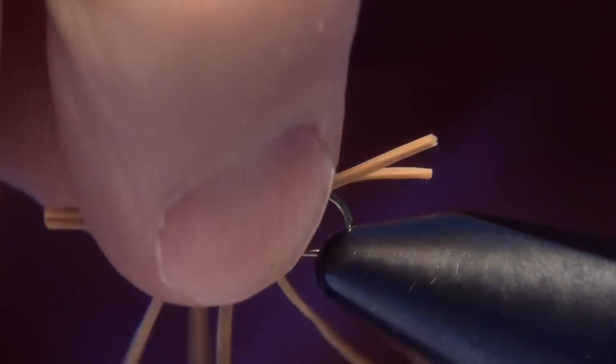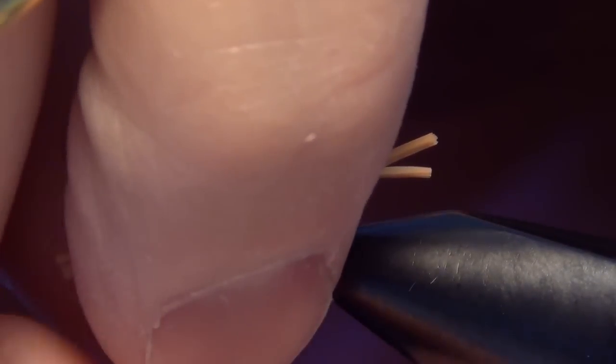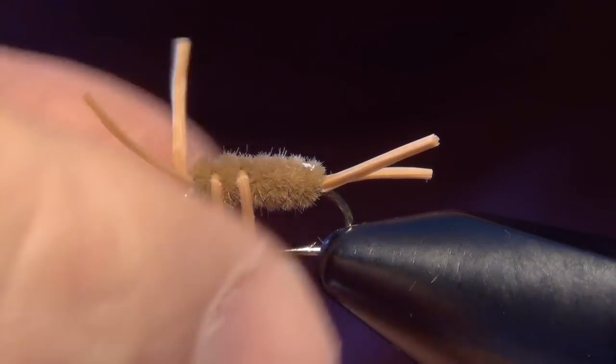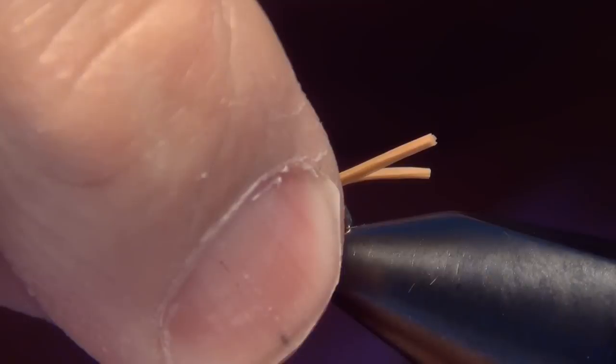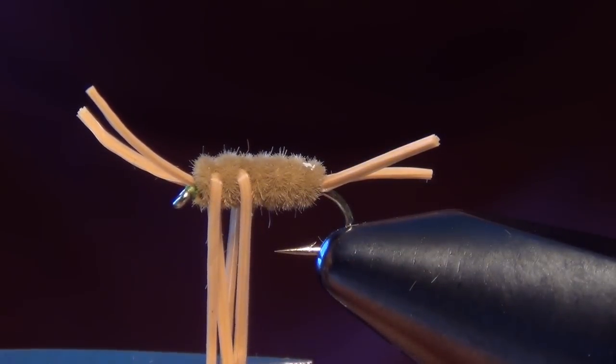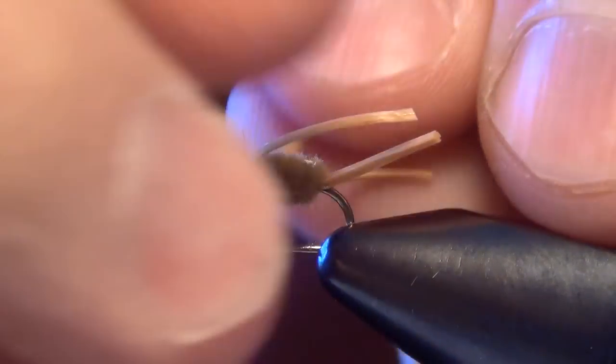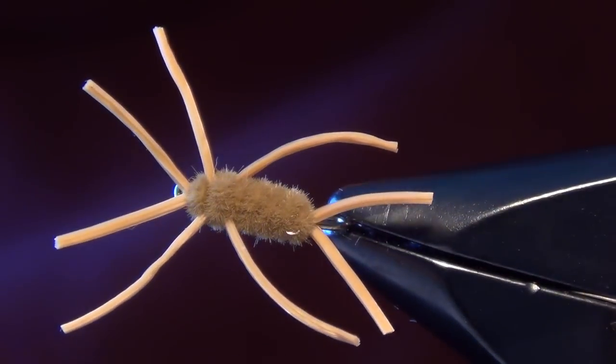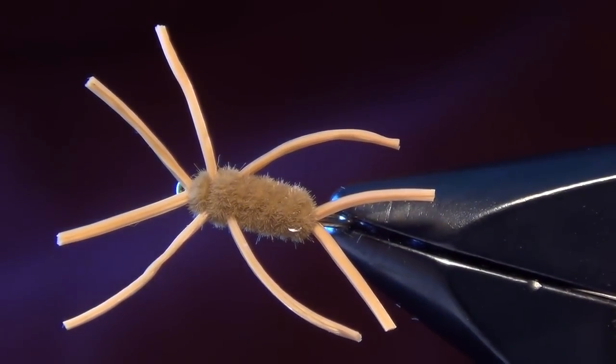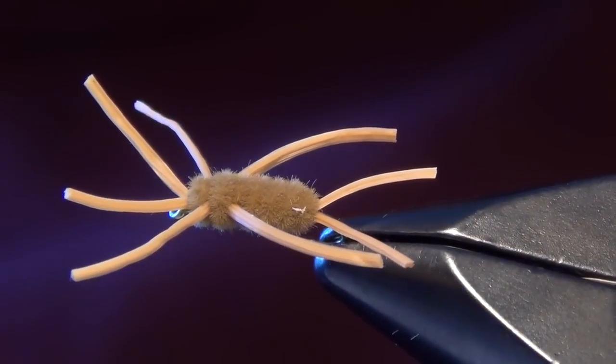Then the legs we're going to trim a little longer. I just push them all down and out of the way. Don't stretch them, you just kind of hold them with some loose tension. And we're going to trim those. I like those to be about one and a half times the length of the body. And what you end up with is just this perfect little tiny rubber legged stonefly.